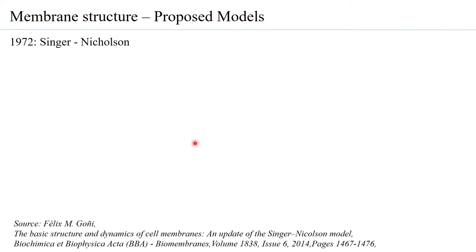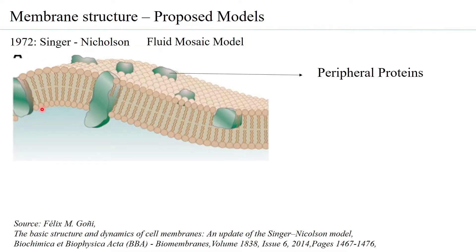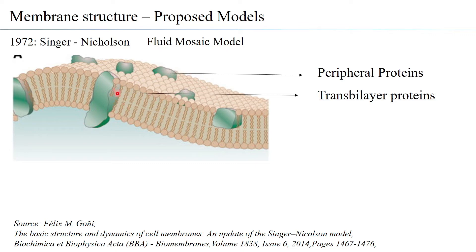The accepted model remains Singer-Nicholson's fluid mosaic model, proposed in 1972. Their main conclusions were that the membrane comprises peripheral proteins present on the surface, and transmembrane proteins — also called transphospholipid bilayer proteins — that traverse the bilipid layer, having a cytoplasmic phase and also an extracellular phase.